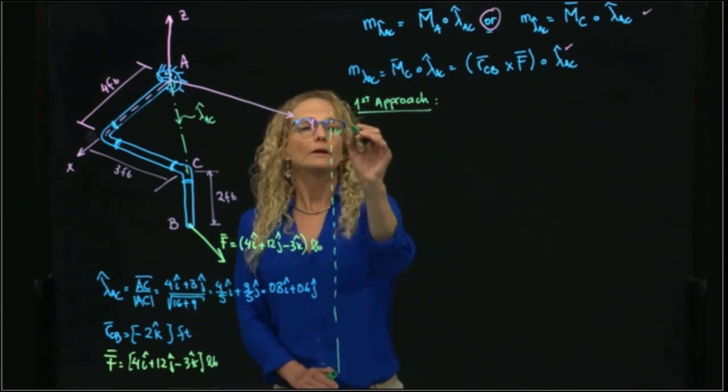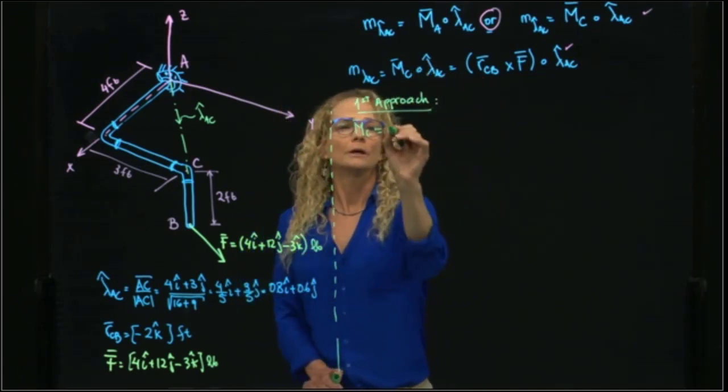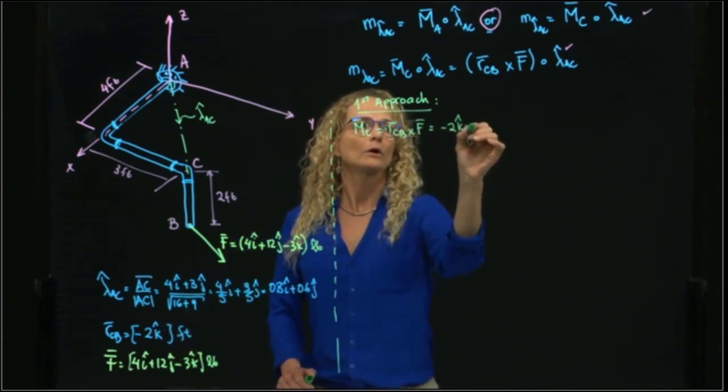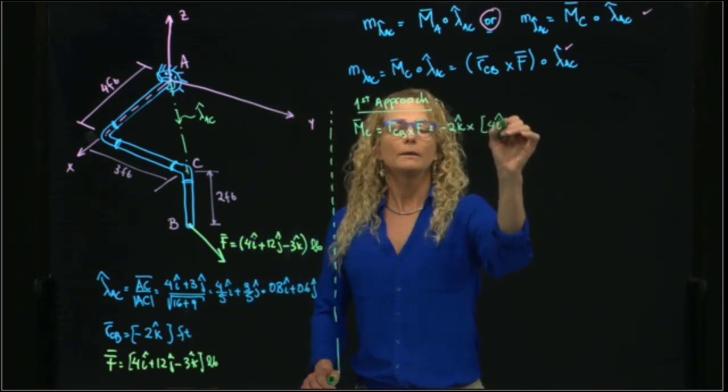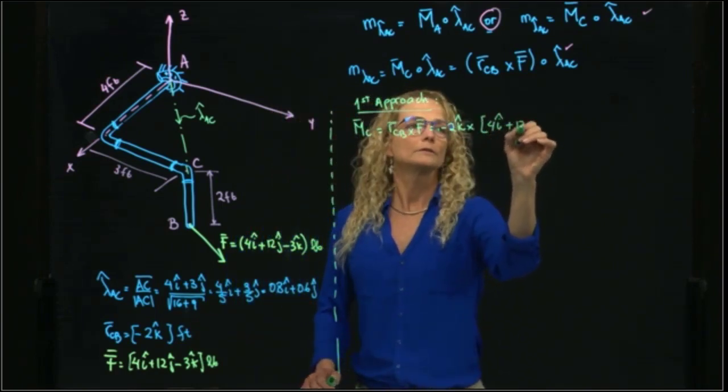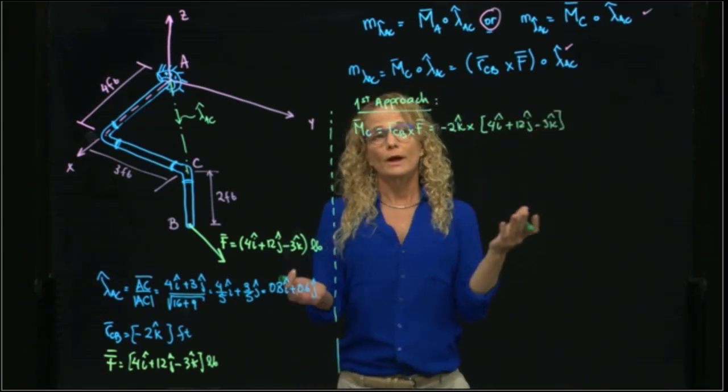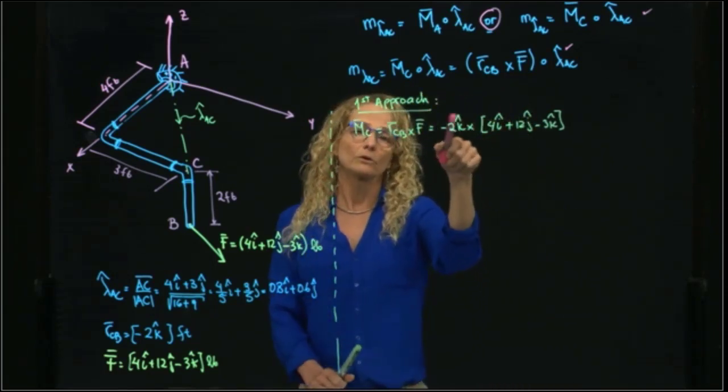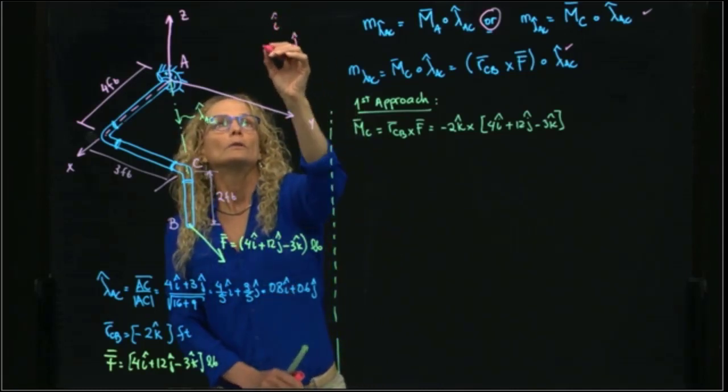So I will calculate first my moment at C, which is RCB cross F. That equals negative 2k cross (4i plus 12j minus 3k). I could write that as a matrix, but since this vector has only one component, I will use this multiplication rule.